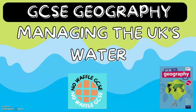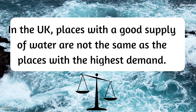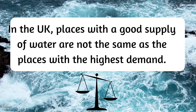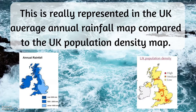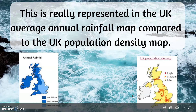GCSE Geography: Managing the UK's Water. In the UK, places with a good supply of water are not the same as the places with the highest demand. This is really represented in the UK's average annual rainfall map compared to the UK population density map.